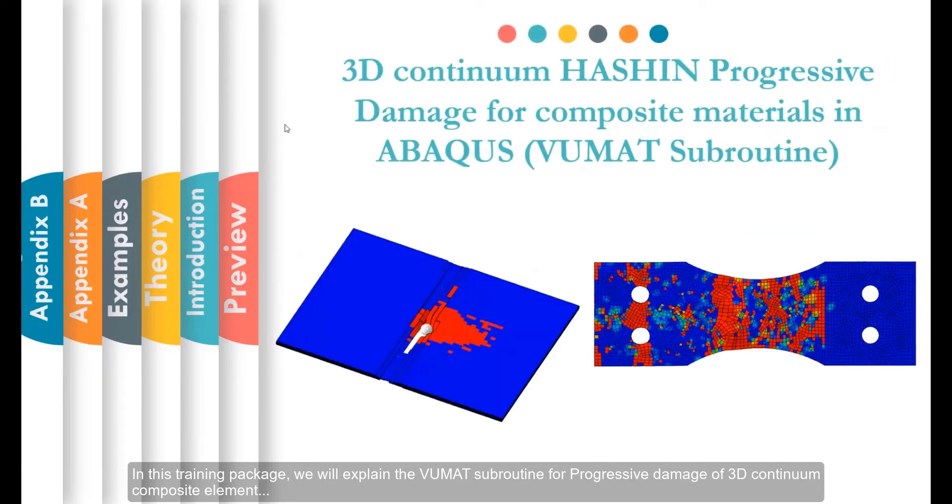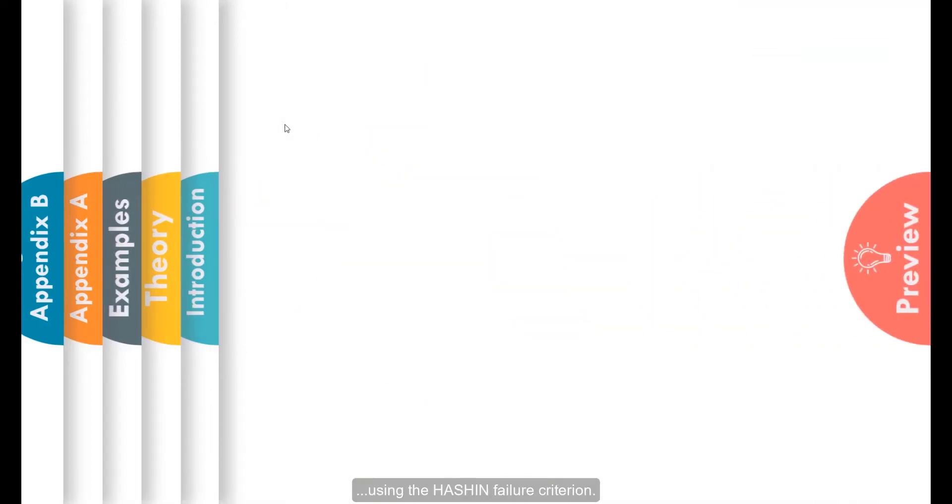In this training package, we will explain the VUMAT subroutine for progressive damage of 3D continuum composite element using the Hashin failure criterion.